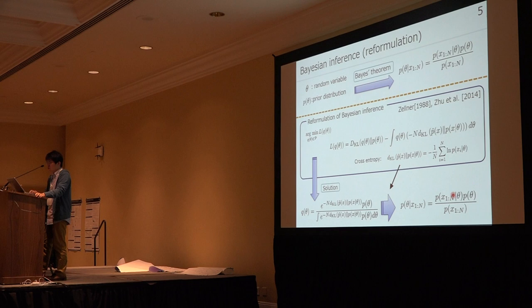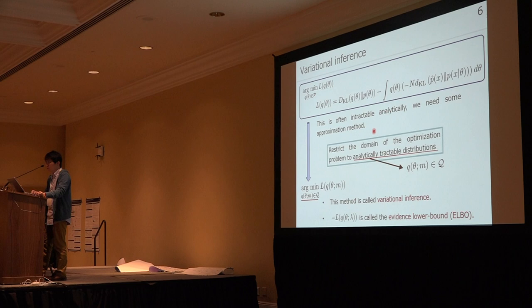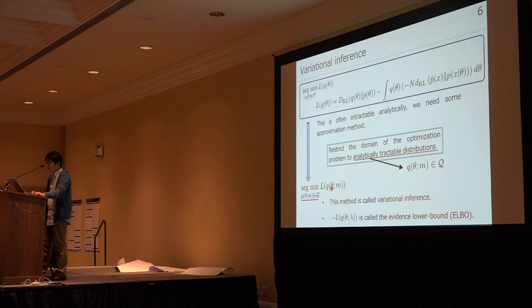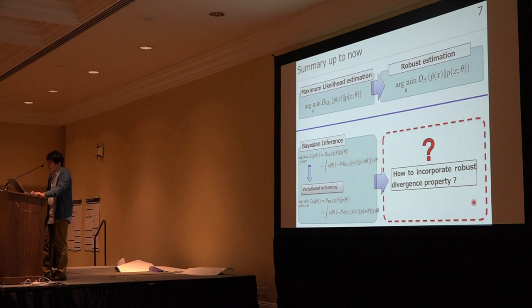The analytical expression of this distribution is intractable, so we have to use approximation methods. One common method is to restrict the domain of the optimization problem to analytically tractable distributions, parameterized by m. The resulting optimization problem is called variational inference, and the negative objective is often called the evidence lower bound (ELBO).